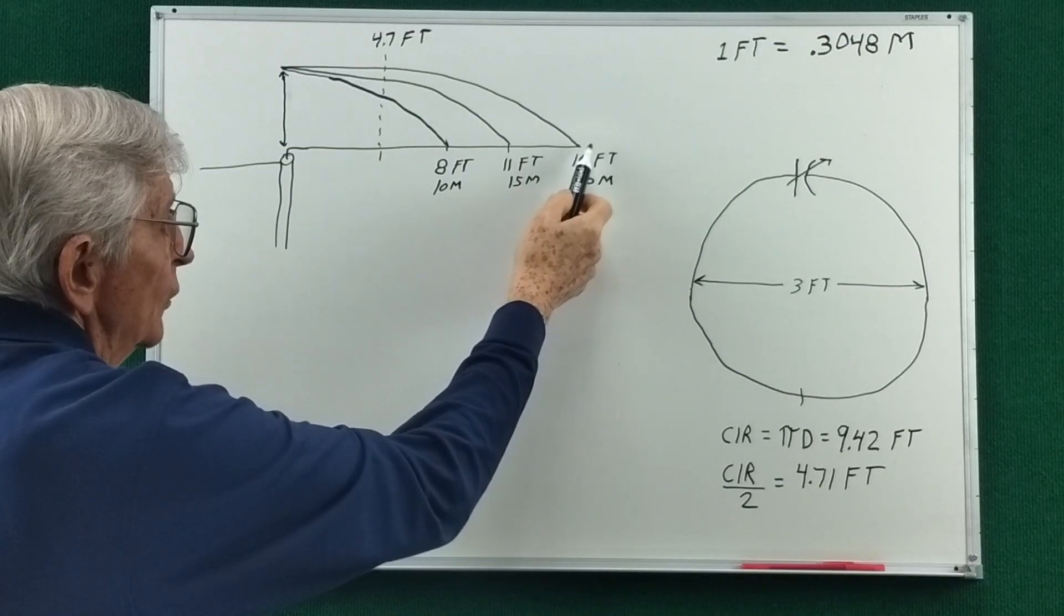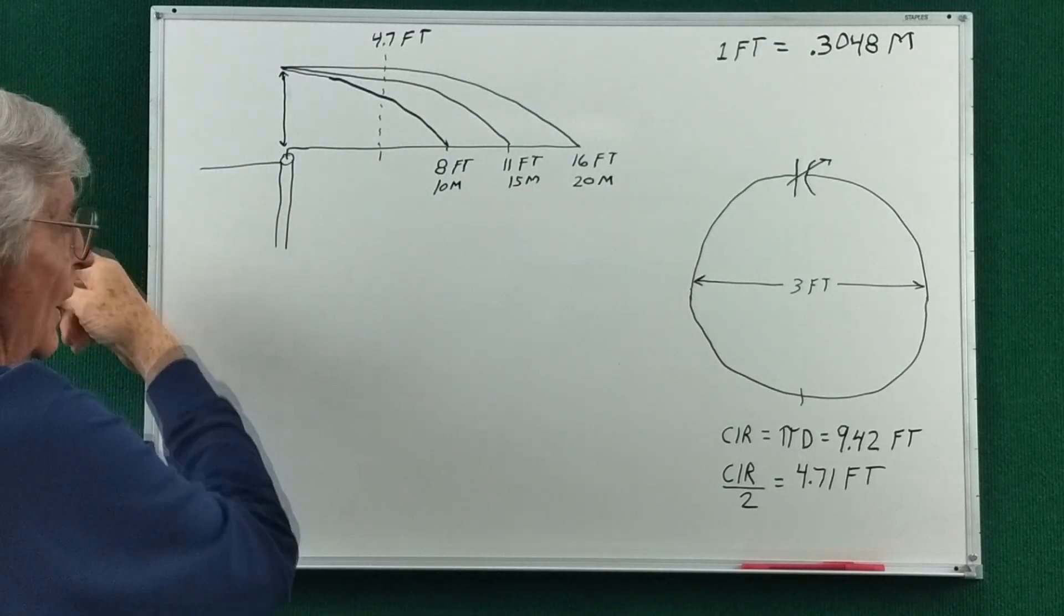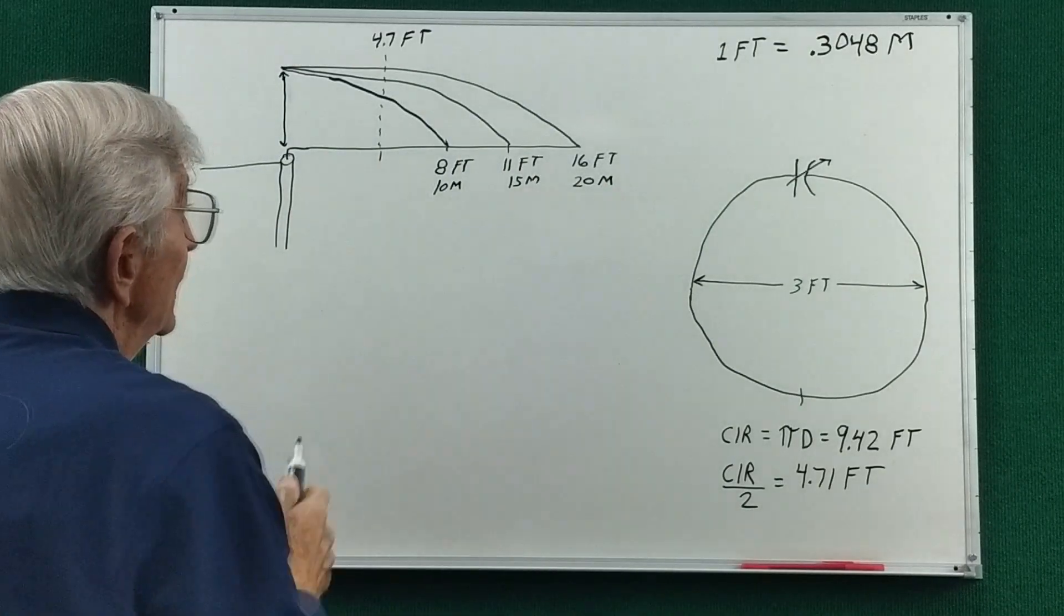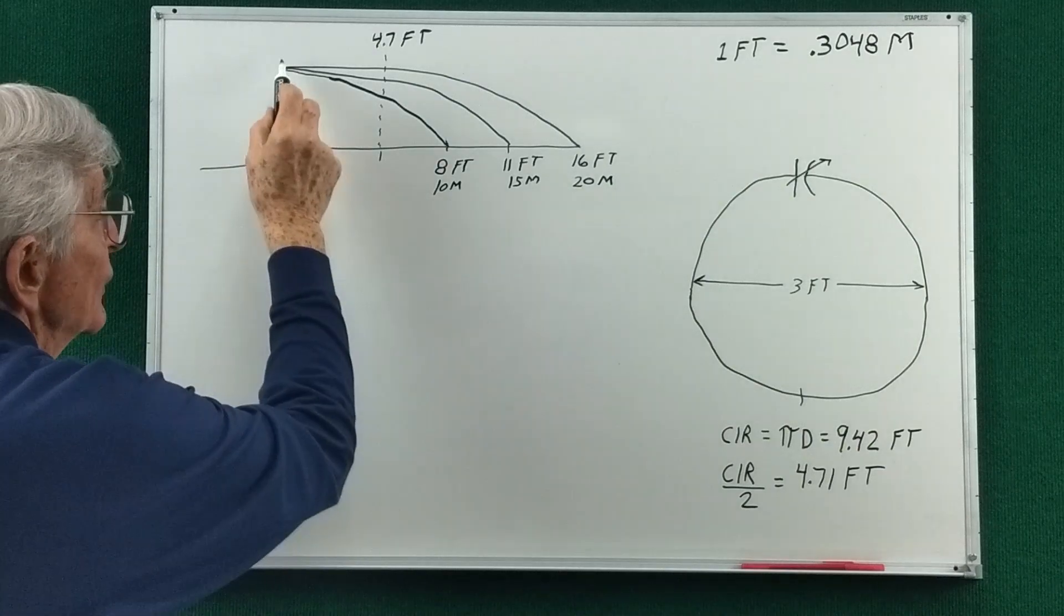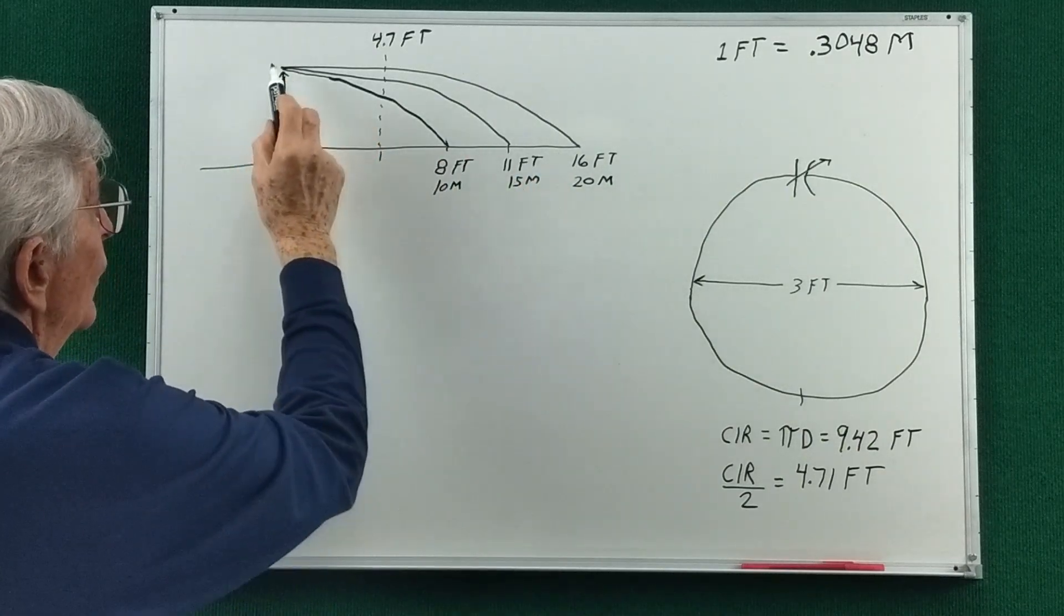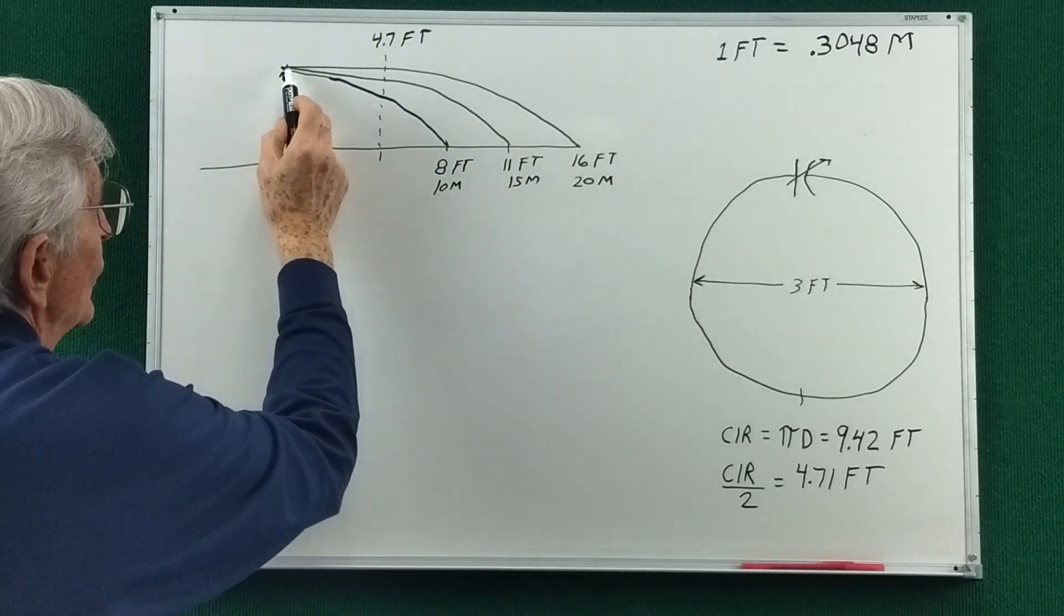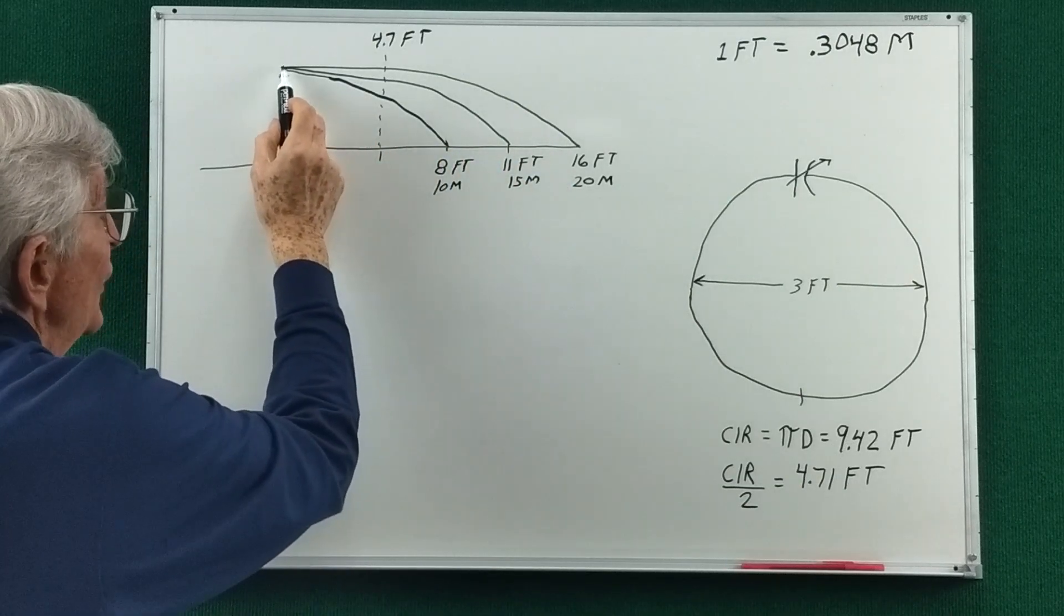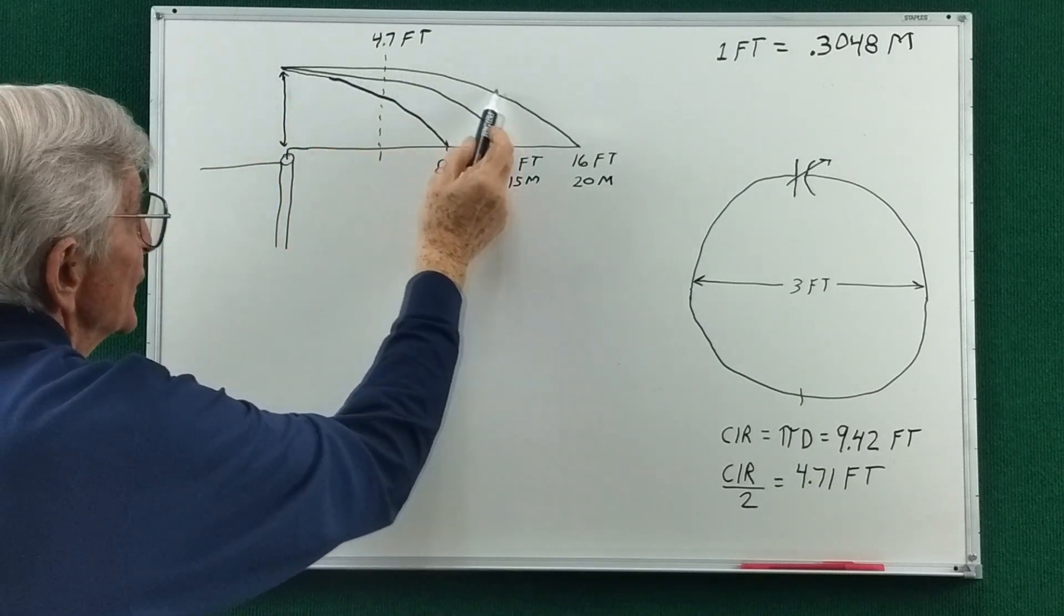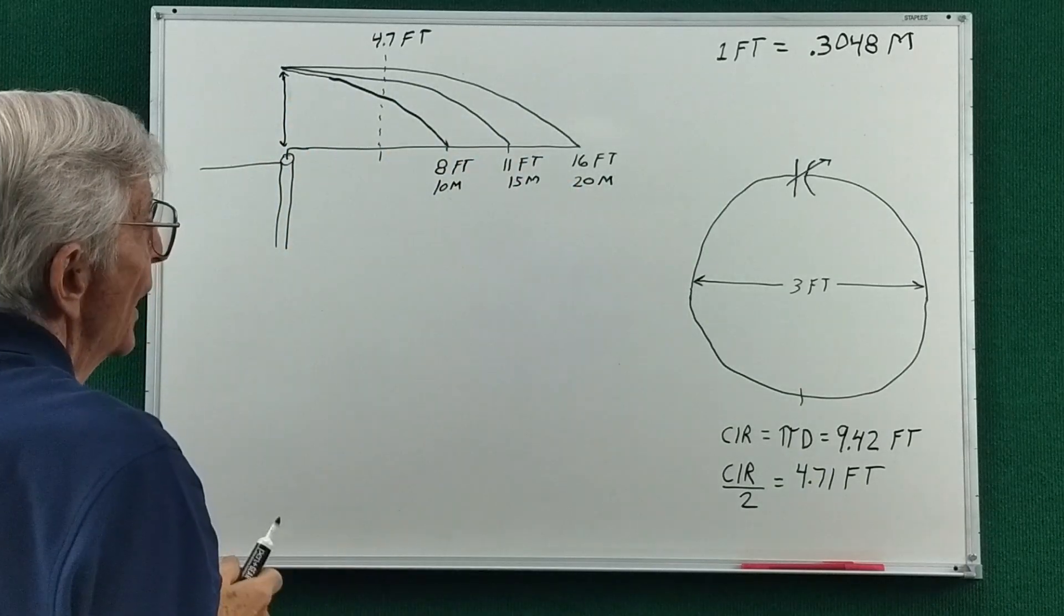And the usual way of showing current distribution on a dipole is to just show it like this. And the current is maximum at the feed point and tapers to zero at the end of the dipole.